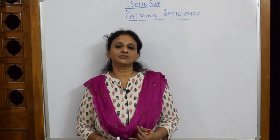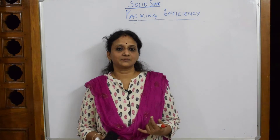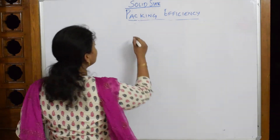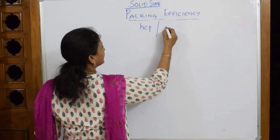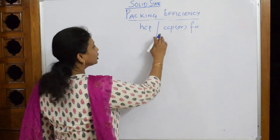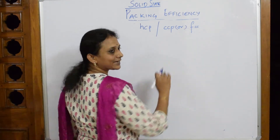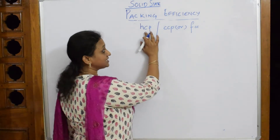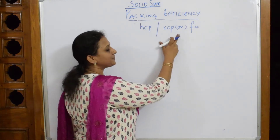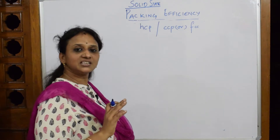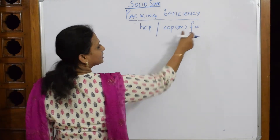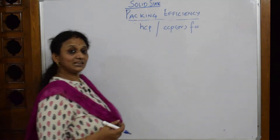Till now we have learned packing efficiency in simple cube and BCC. Now we'll be learning packing efficiency in HCP and CCP or FCC — yes, both are the same. Don't get confused: cubic close packing and face-centered close packing are the same. HCP packing efficiency and FCC packing efficiency are the same, but HCP has six effective atoms while FCC has four effective atoms.